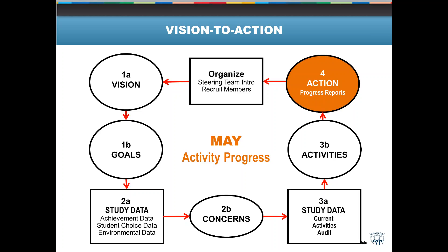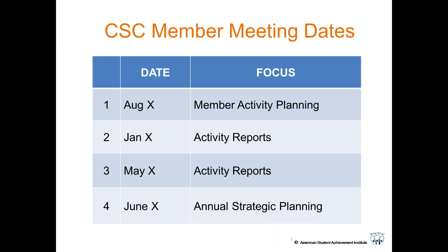We're picturing that each of your member organizations would get a chance to chat. As you're presenting this to your member organizations, you will have filled in already the dates for your meetings. We just talked with Dustin Bryant in Vigo County — he's already done this and sent it out to his member organizations in an email. So all the member organizations in Vigo County already have these meeting dates on their calendar. At least at this first meeting of the year, we want to make sure all your member organizations know when all four meetings are for the year.